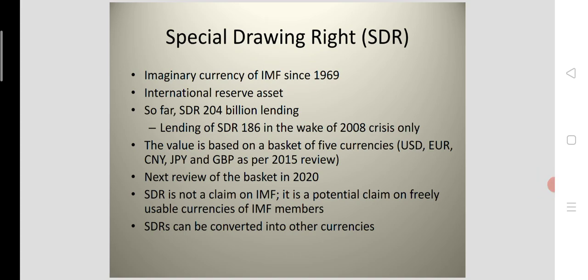Besides quota access, there are Special Drawing Rights, also called SDRs. This is the imaginary currency of the International Monetary Fund since 1969 and has become an international reserve component. Nations at present keep international reserves in SDRs alongside the dominant dollar and other currencies. So far, the IMF has provided lending of 204 billion SDR, in addition to member nations accessing funds from their own quotas.